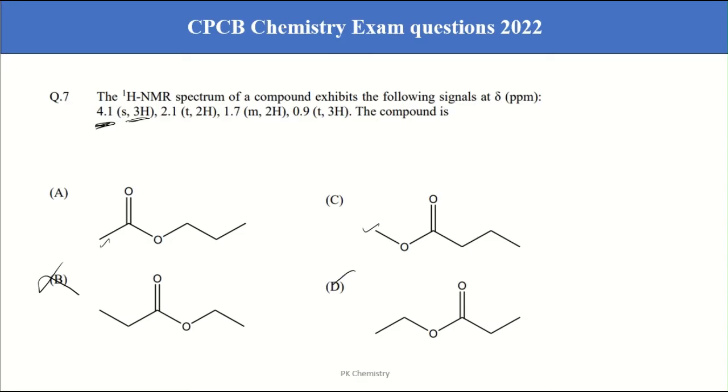So our answer B and D is not our answer. And look at this 4.1. This is highly deshielded one compared to this methyl and this carbon and this methyl and oxygen. So due to oxygen more deshielding happens. This gives 4.1 singlet and if you look at this one around 2.1.